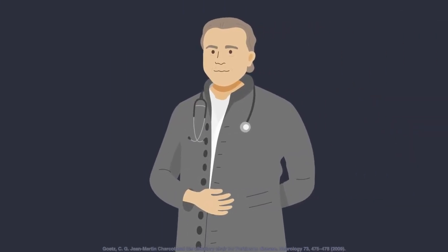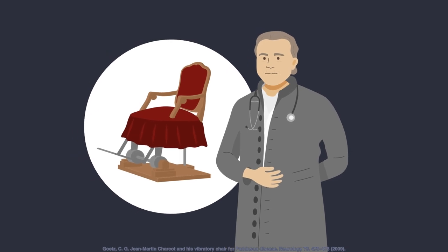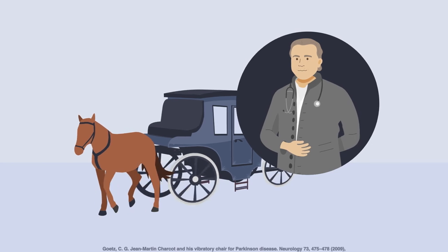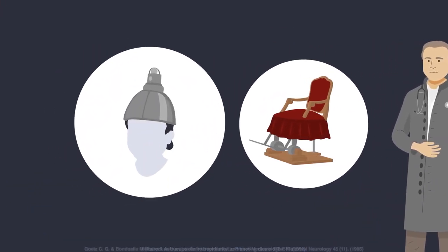Vibration was first suggested to improve Parkinson's symptoms back in the 19th century by the renowned neurologist Dr. Jean-Martin Charcot, who noted that patient symptoms were less severe after arriving by railroad or carriage. Over the years we have refined our understanding of this finding.